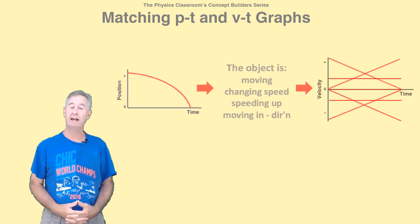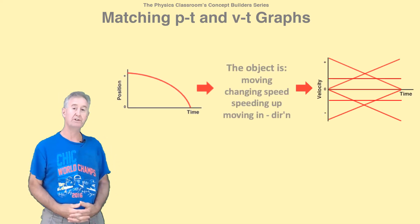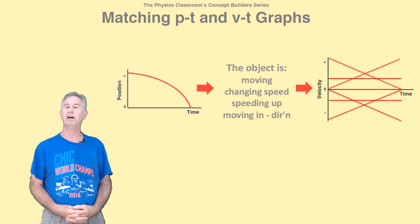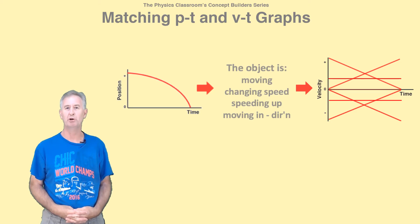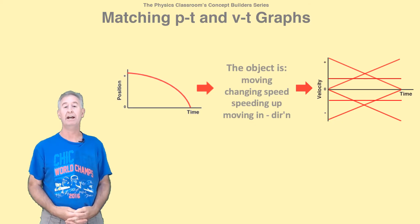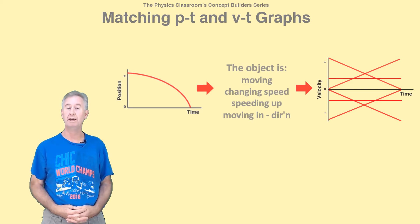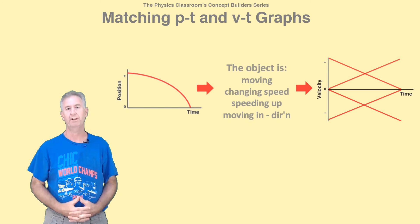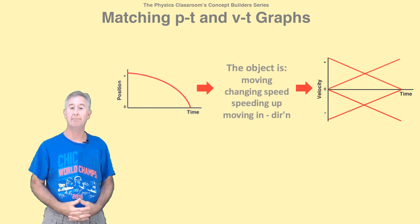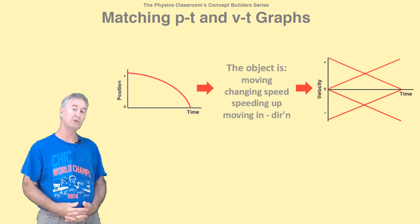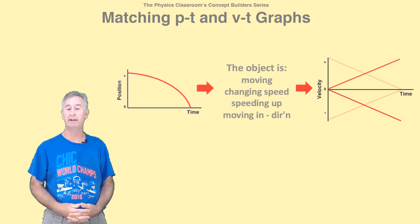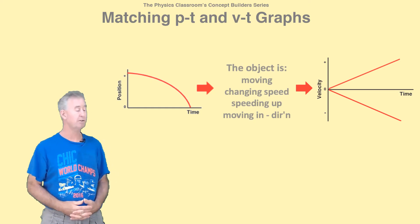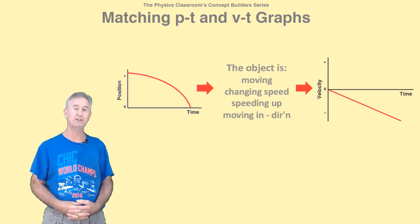So now back to our example problem. I have to translate these words into the features of the VT graph. I know the object is moving, so the line is not on the V equals zero mark. It's either above or below it. Second, I know the object has a changing speed, so the line is going to have some slope to it. It won't be horizontal. Third, I know the object is speeding up, so the line will start close to zero and move further and further away from it. And finally, I know that the object has a negative velocity, so the line is in the negative region of the graph.